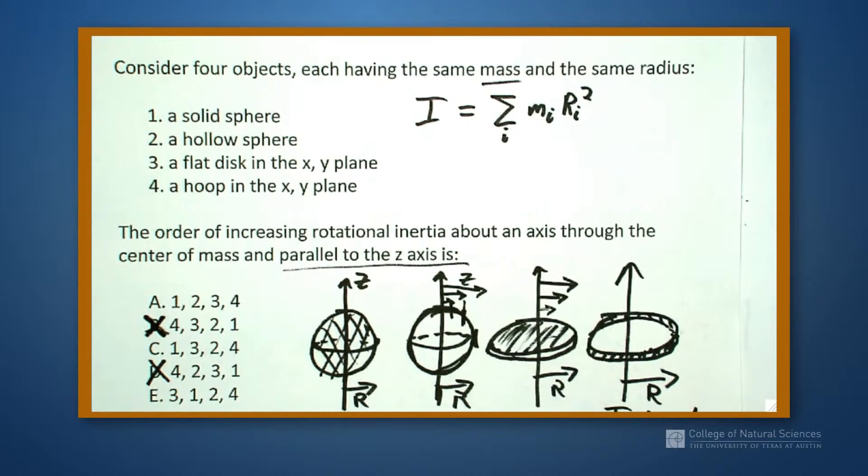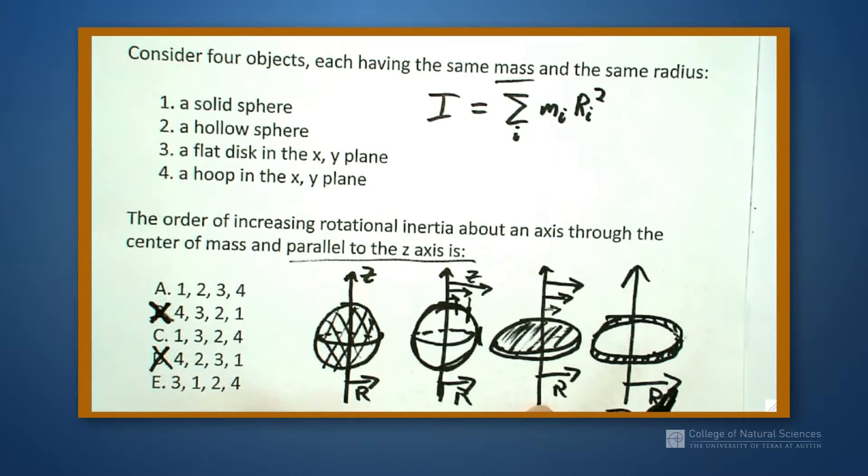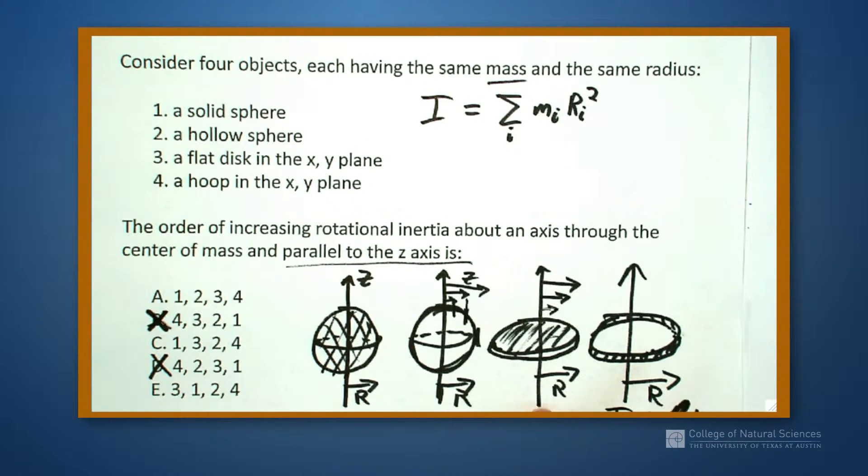All right, one and three are bidding for the closest. That's a tricky one. Let's see if we can't figure out what's going on.